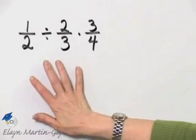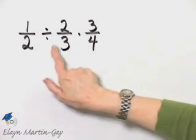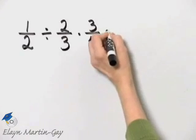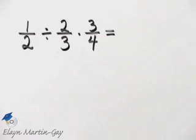Let's perform indicated operations. We have one-half divided by two-thirds times three-fourths. Remember order of operations? We multiply or divide in order from left to right.